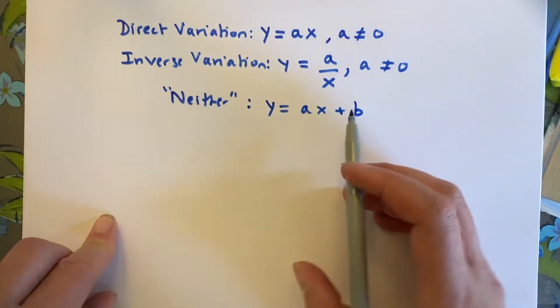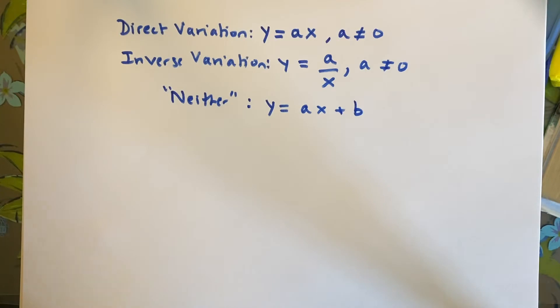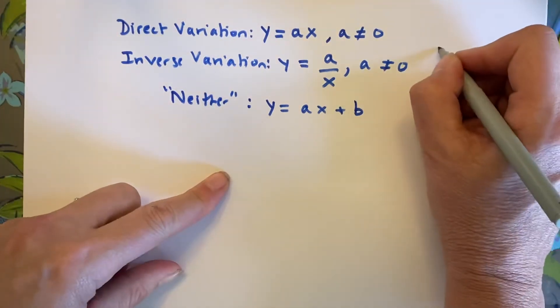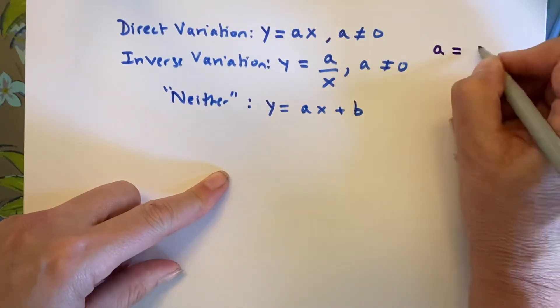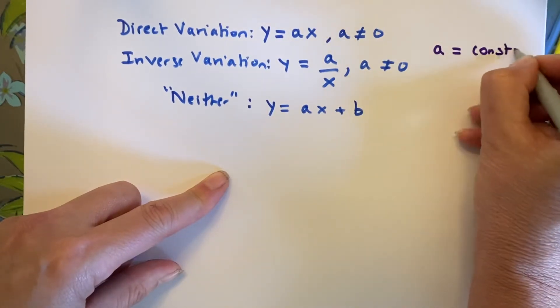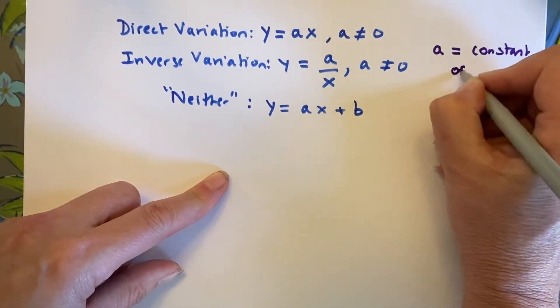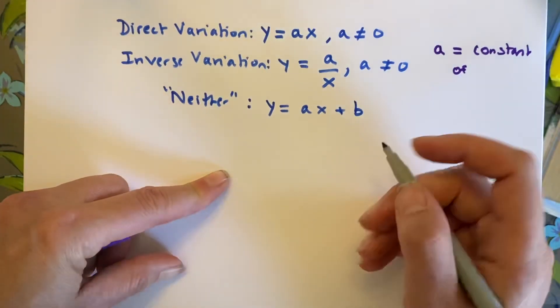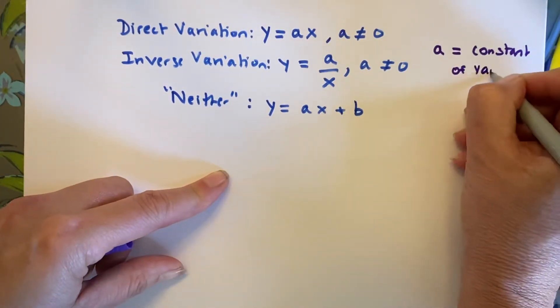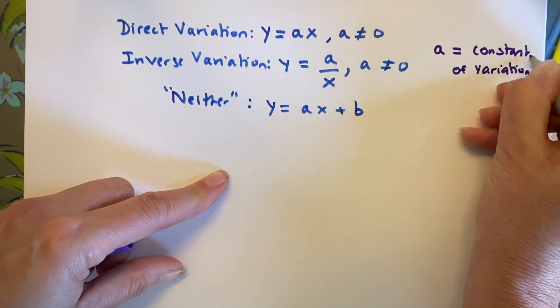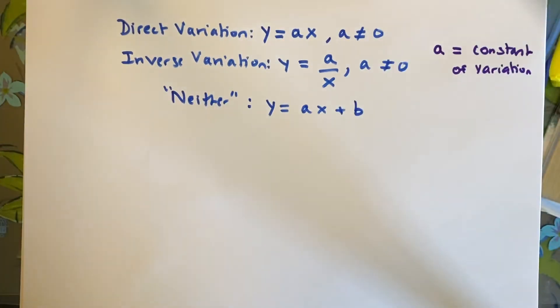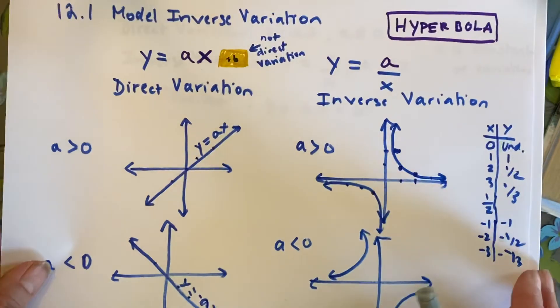Now, anything like this, and there will be many things that we'll call them neither, are things like y equals ax plus a number. We'll put that number as b. That is neither. It's not direct variation because it does not go through the origin. So, the first thing that we have to look at. Oh, before I go through some problems,